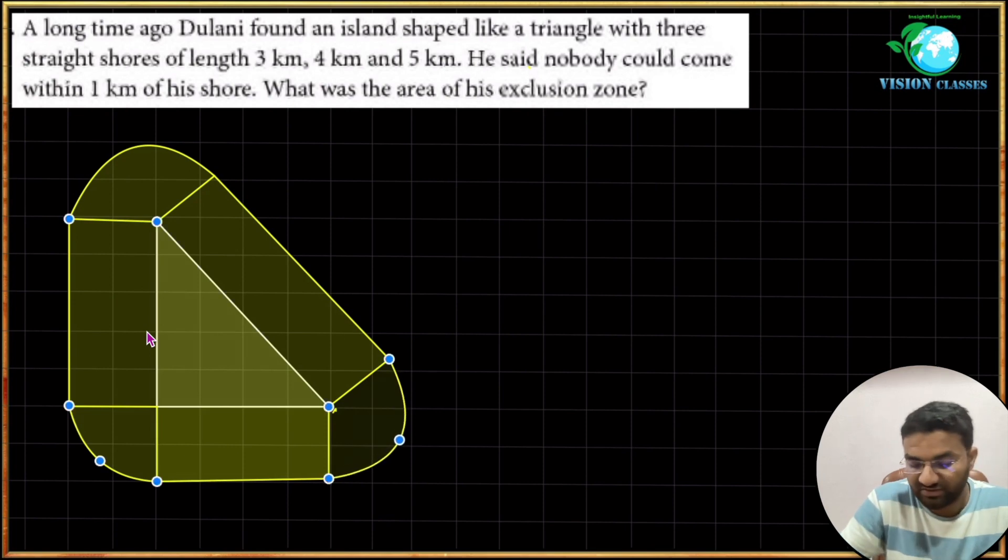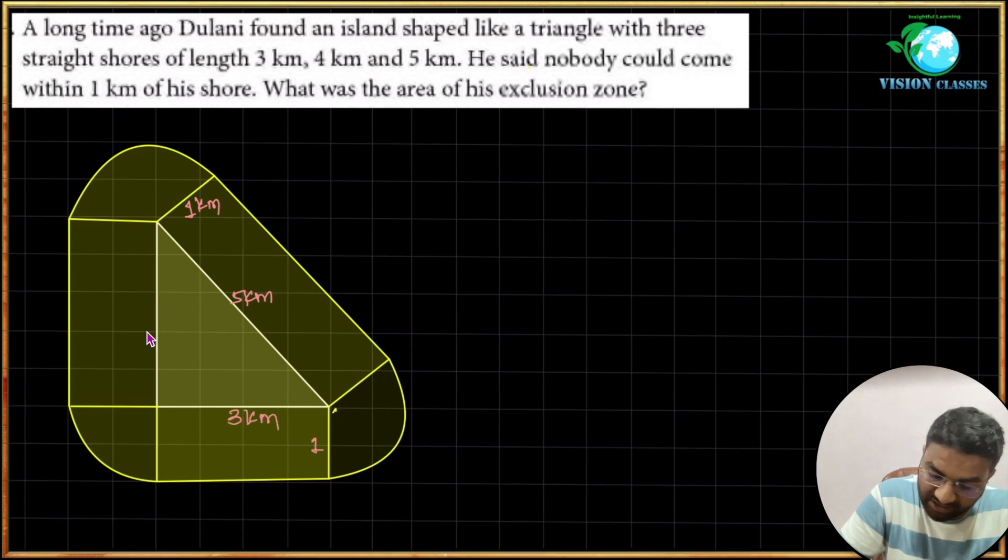So what you need to do is that you have to separate. So this is 1 kilometer, right? This is 5 kilometers, then this one is 3 kilometers, 1 kilometer radius. 4 kilometers, okay. So here we will name them and even do a little bit of separation.